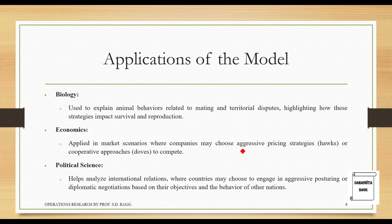In economics, people adopt these kinds of approaches in the market and try to compete and survive. Political Science: helps analyze international relations where countries may choose to engage in aggressive posturing — Hawks — or diplomatic negotiations — Doves — based on their objectives and the behavior of other nations. Diplomatic negotiation is generally preferred for maintaining peace in the world.